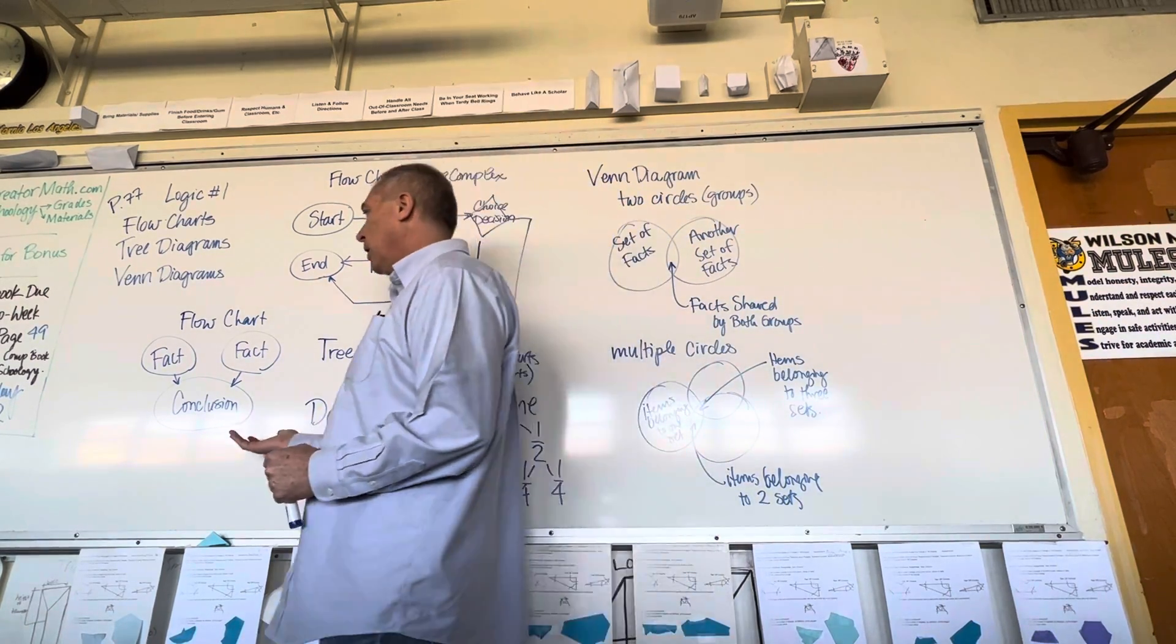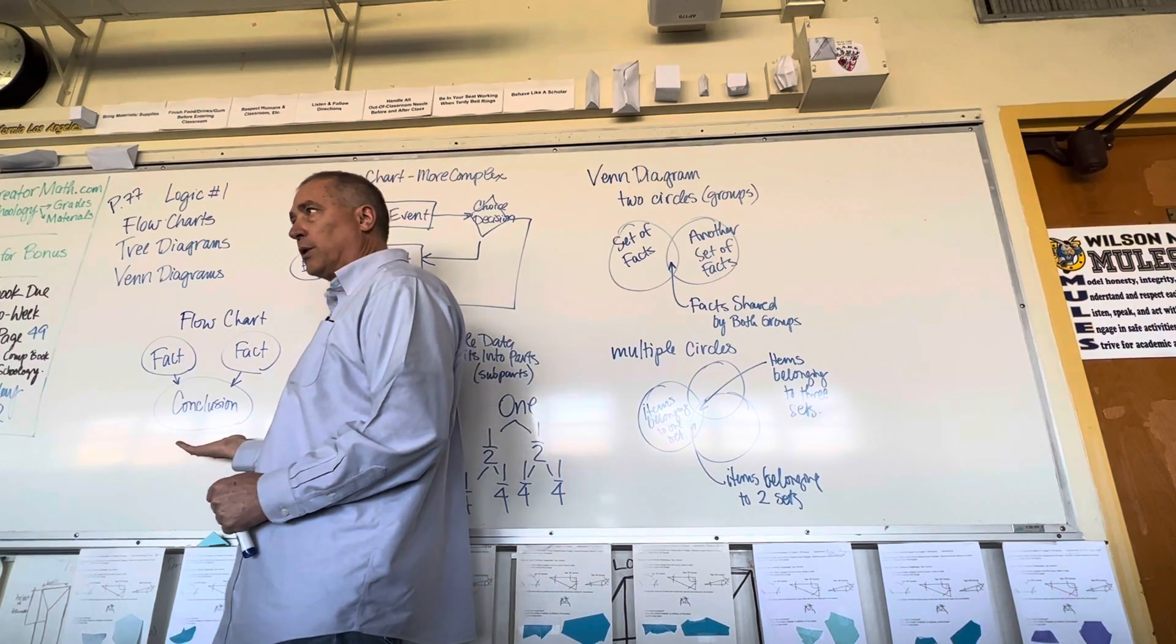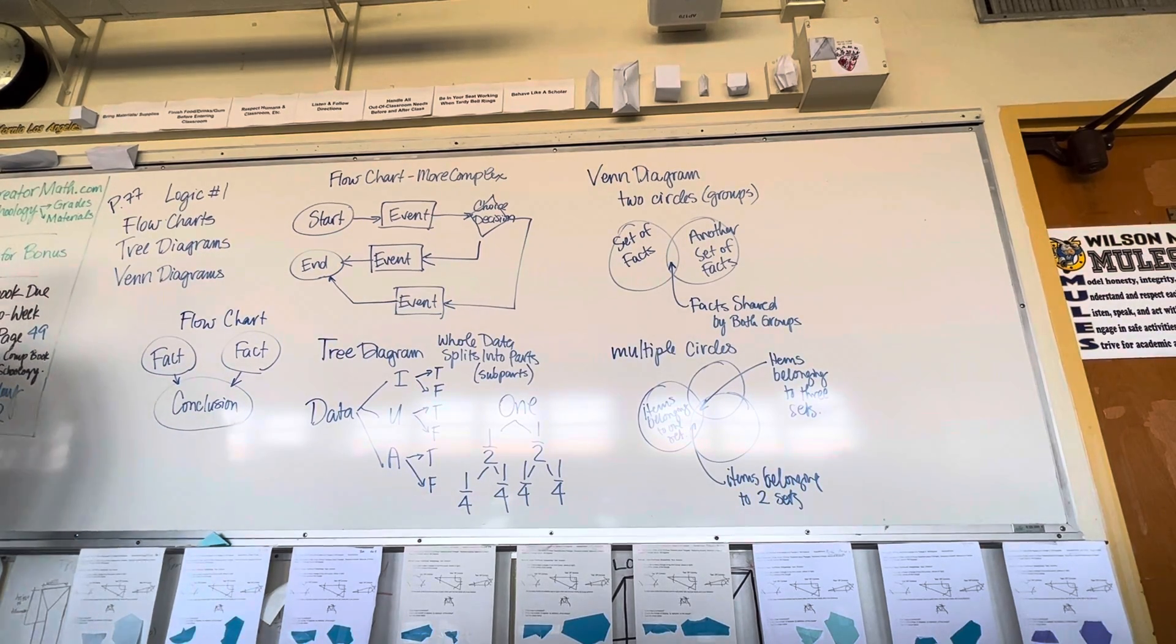So let's start with flowchart. Flowchart starts with facts and comes down to a conclusion. In geometry class, we'll often talk about the law. Right? Well, how many of you have watched TV shows or movies where there's a court case? It's attorneys in court. There's a defendant. There's a prosecution. Right? And somebody's on the stand. Who else is there? What's the prominent figure in the courtroom? The judge. Right? Wearing that outfit, which gives them authority and all these things.